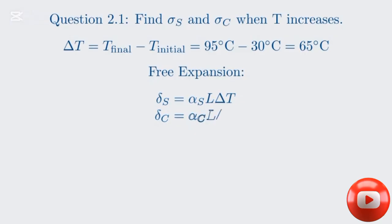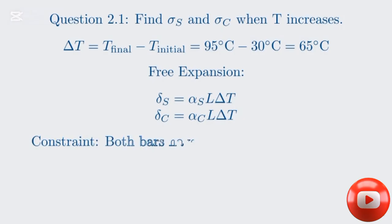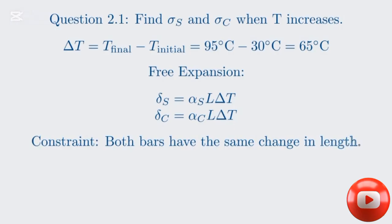If the bars were free to expand, the change in length of each material would be: for steel, alpha_S times L times delta T, and for copper, alpha_C times L times delta T. However, the ends are rigidly fixed, which means the total length of the compound bar must remain constant. Since copper has a higher coefficient of thermal expansion than steel, copper would want to expand more. But because they are fixed together, copper is prevented from expanding fully, putting it into compression. Conversely, steel is being pulled along by the copper, which puts the steel into tension. So we expect the copper to be under compression and the steel under tension.